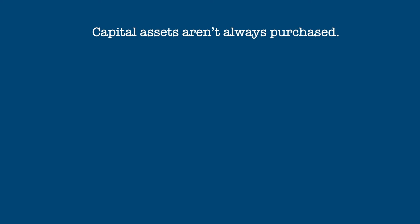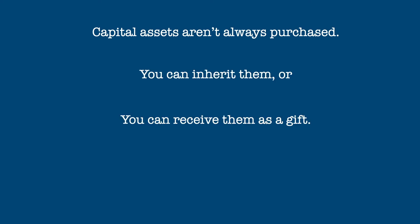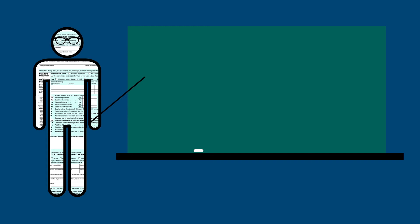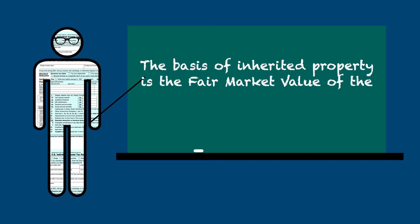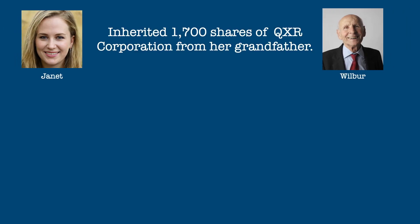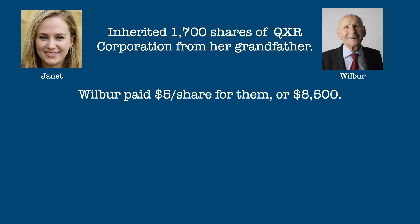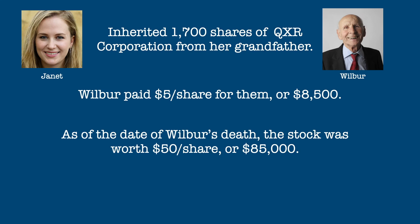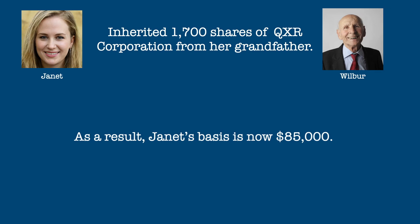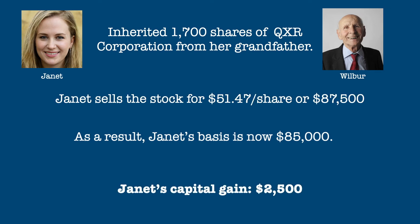So that's how basis is calculated when an investment is purchased. But there are other ways to obtain capital assets — you can inherit them, or you can receive them as gifts. If you didn't pay for the asset, how do you determine its basis? For inherited property, it's easy. The basis of inherited property is the fair market value of the property as of the date of death of the person who left it to you. For example, Janet inherited 1,700 shares of QXR Corporation from her grandfather, who paid $5 each for them, so his basis was $8,500. When he died, the stock was worth $50 per share for a fair market value of $85,000, which now becomes the new basis. If Janet sells the stock three months after she inherits it for $87,500, her capital gain would only be $2,500.